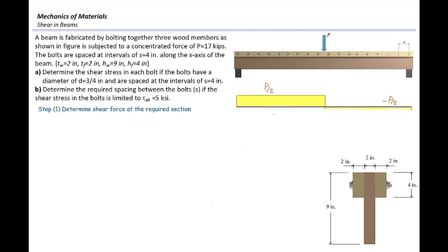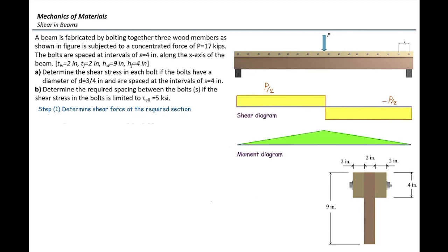Drawing the shear diagram: on the left side we go up by P over 2, which remains constant to the middle where there is a jump downward to negative P over 2, remaining constant to the other side. The moment diagram has zero value at both ends due to pin supports, with the maximum value at the middle of the beam equal to P over 2 multiplied by L over 2, giving PL over 4. The maximum shear is P over 2. With P equal to 17 kips, the maximum shear force is 8.5 kips.